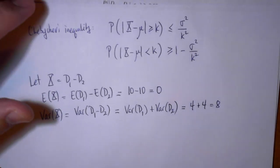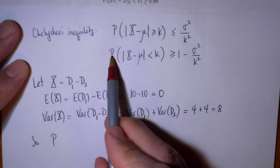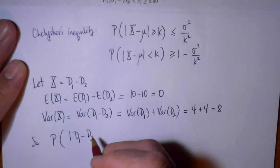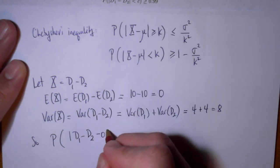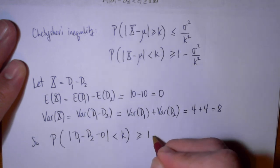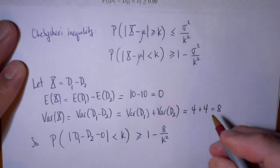Okay, so let's plug that into Chebyshev's inequality. So if I plug into this line here, the probability that D1 minus D2 minus 0 is less than k, is greater than or equal to 1 minus sigma squared is the variance 8 over k squared.